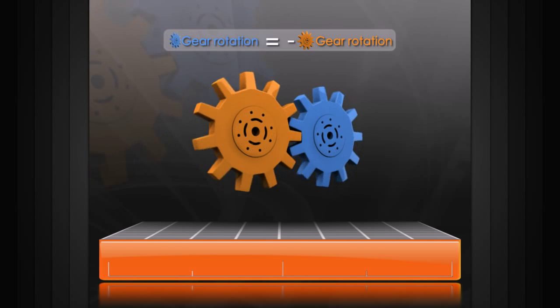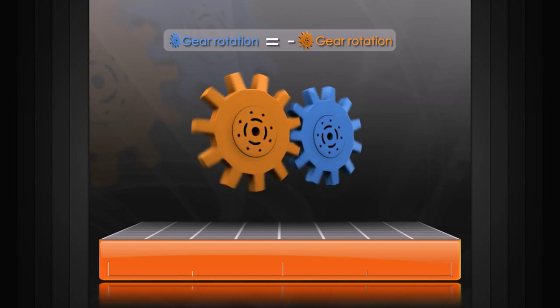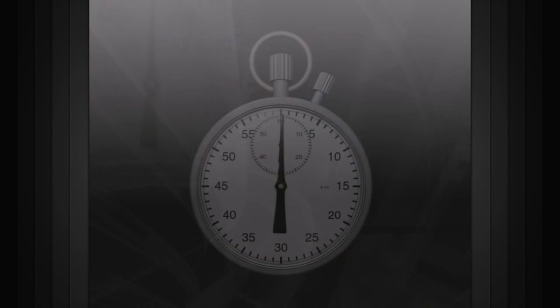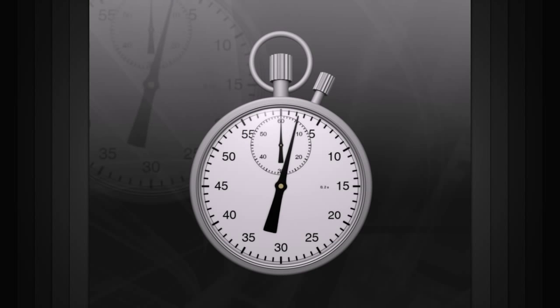Let's see how we can use this in a practical example, like a stopwatch. Here we have a minute hand and a second hand. In the real world, the minute and second hand's motion are connected. Every time the second hand makes a revolution, the minute hand rotates forward.